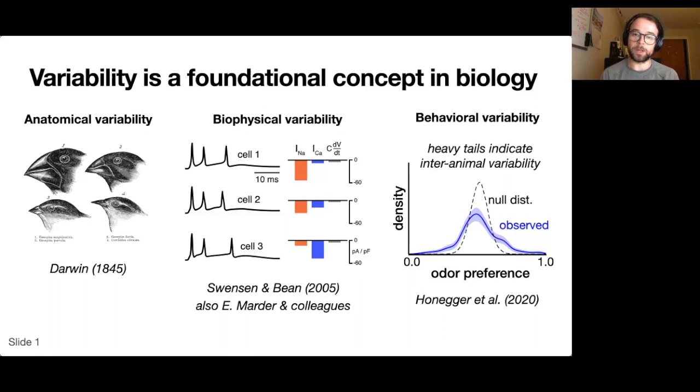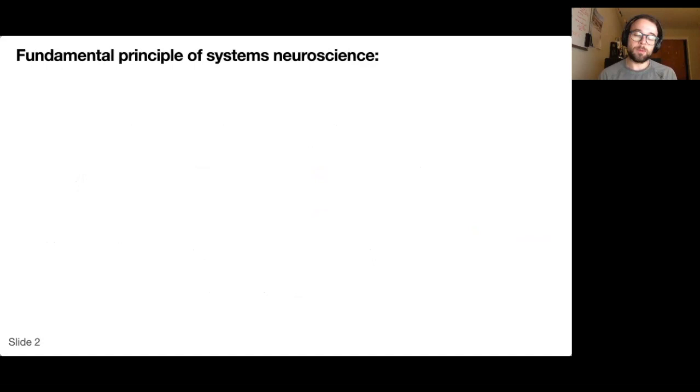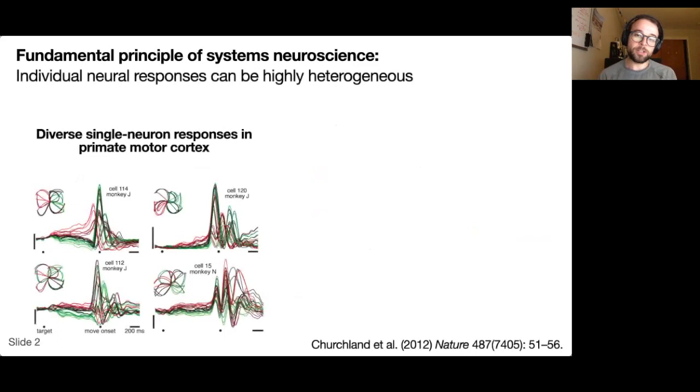But in systems neuroscience, animal-to-animal variability is still poorly understood in a lot of cases. Broadly speaking, what we're interested in is characterizing activity of large neural populations. This is because if you look at the activity of individual neurons, they're often very diverse and difficult to interpret.